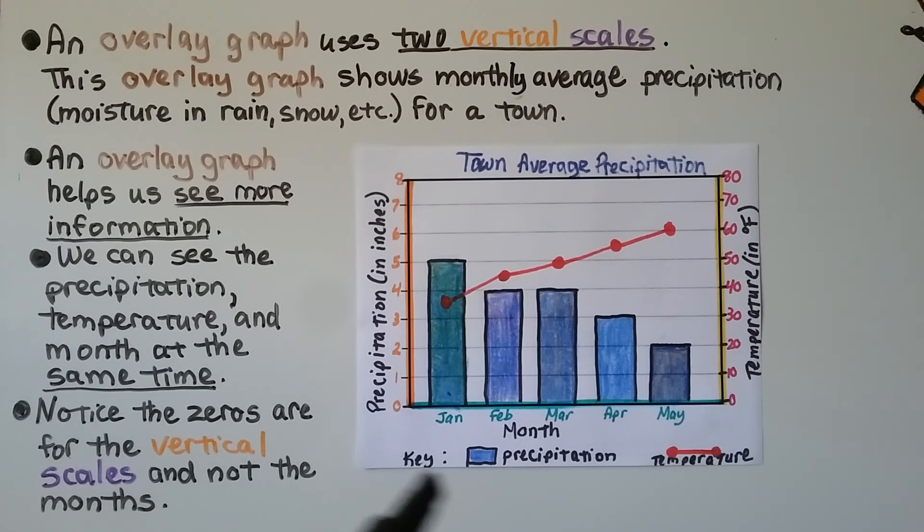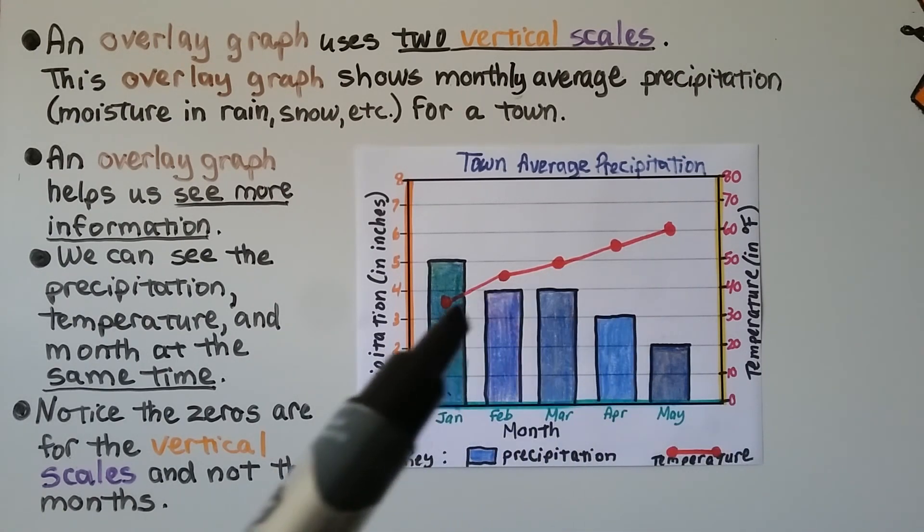It's showing the key down here, that these blue bars are for the precipitation, and that the line segment with the two points, that is the temperature.